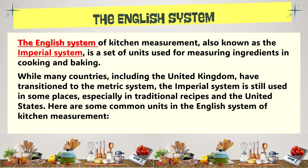The English system of kitchen measurement, also known as the imperial system, is a set of units used for measuring ingredients in cooking and baking. While many countries, including the United Kingdom, have transitioned to the metric system, the imperial system is still used in some places, especially in traditional recipes and the United States. Here are some common units in the English system of kitchen measurement.